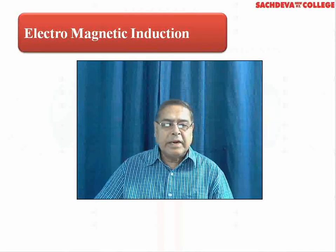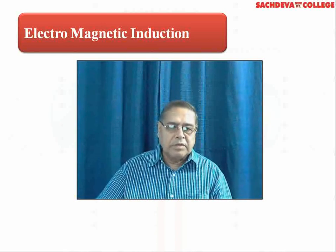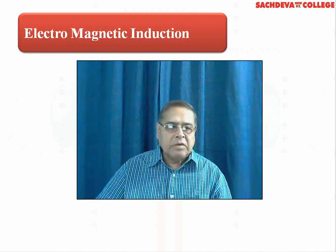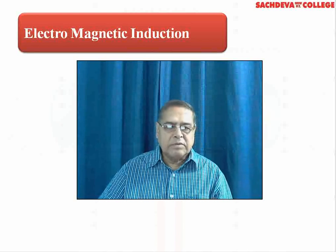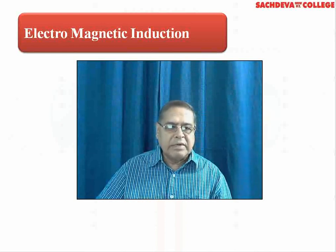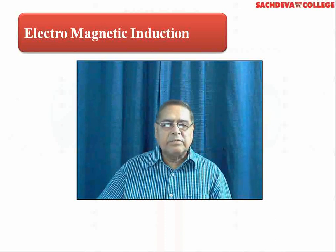We are starting with electromagnetic induction. Before starting with this portion, the point to remember is that electromagnetic induction is an inverse operation of magnetic effect of current. Magnetic effect of current was first explained by Oersted, whereas electromagnetic induction was first explained by Faraday. In Oersted's experiment, we have seen that when we pass current in a wire or conductor and bring a magnetic needle near that conductor, we find that magnetic field is developed. So, basically in magnetic effects of current, current generates magnetic field.